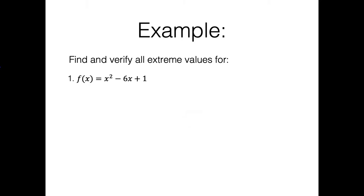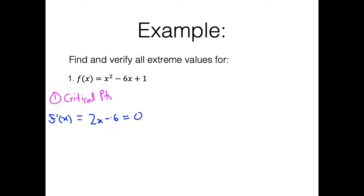Now let's do some examples to really nail this home. We want to find and verify all extreme values for f of x equals x cubed minus 6x plus 1. The first thing we always do is find our critical points by taking the first derivative — using the power rule here — which gives us f prime of x equals 3x squared minus 6. We set that equal to 0, push the 6 over, divide, and we get x equals radical 2 as our critical point.